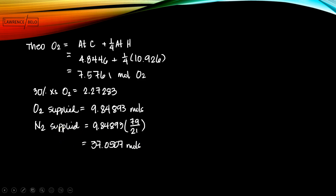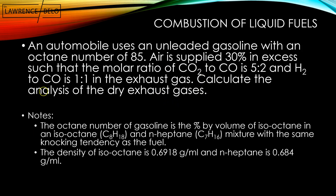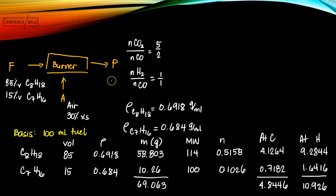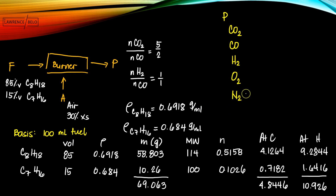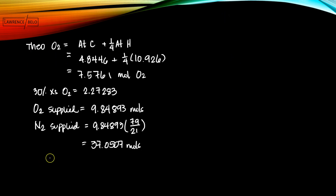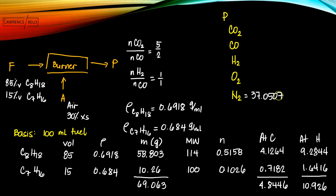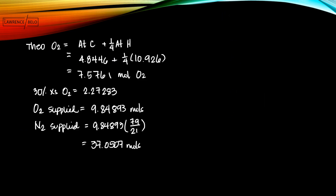We are asked to solve for the flue gas analysis, or analysis of the dry exhaust gases. The flue gases consist of CO2, CO, H2, O2, and N2. We need to solve for all of these. For nitrogen, we already have 37.0507 moles. Now we need to solve for the amount of carbon dioxide and carbon monoxide.